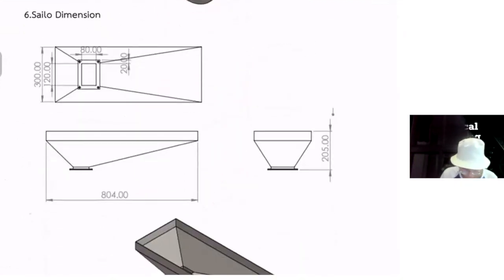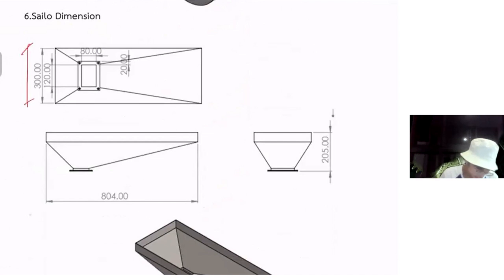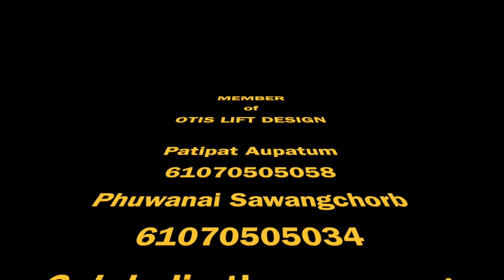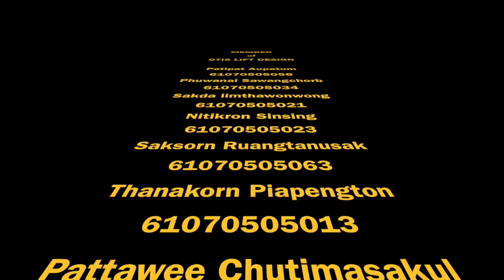This is the silo dimension. We have the width. The maximum width is 300. We have the maximum length is 804 mm. And we have the height of 205 mm. You're allowed to choose some screws.